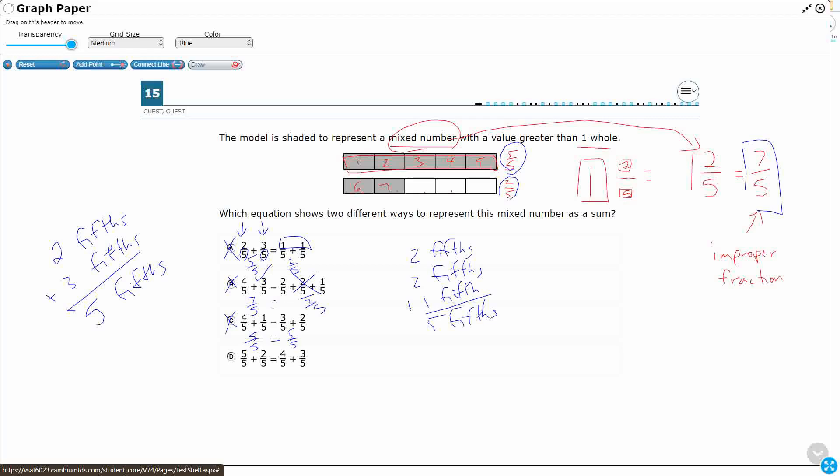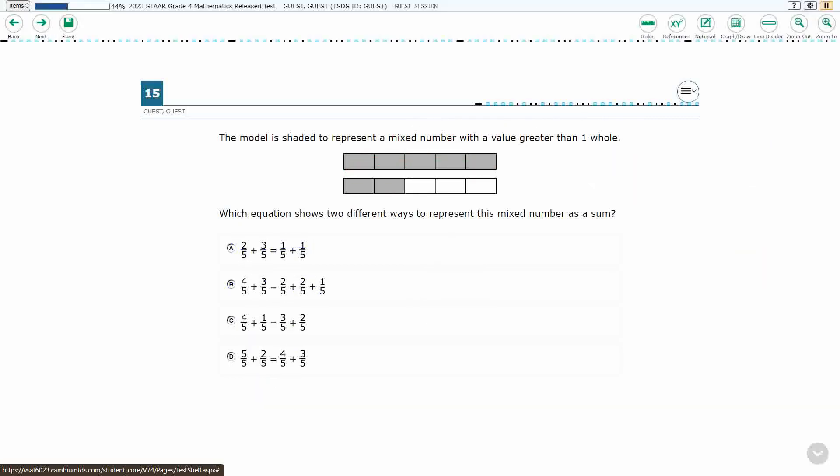Five fifths plus two fifths. There we go. That's seven fifths. Four fifths plus three fifths. There we go. Seven fifths. Seven fifths does equal seven fifths. My answer is D.